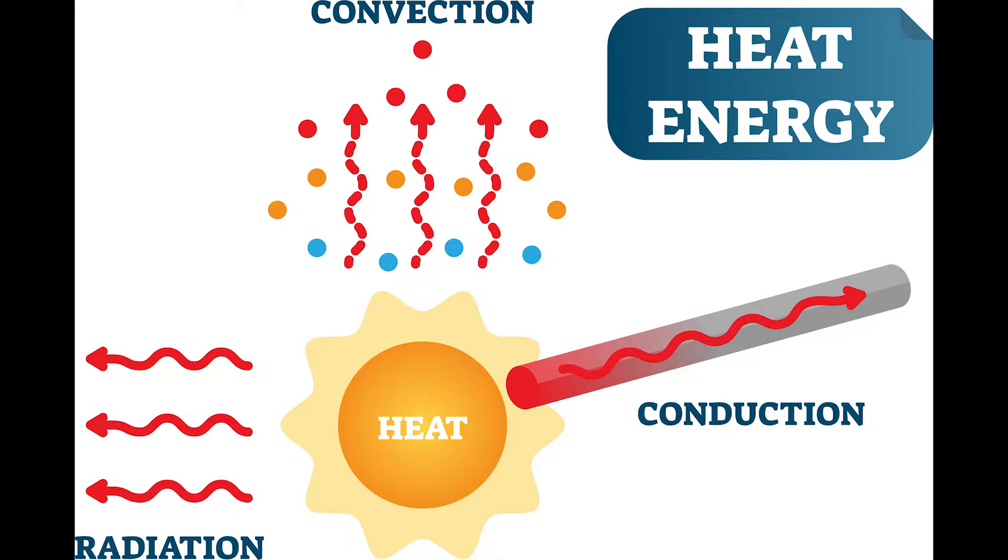The first is conduction, where individual metal molecules are passing heat energy to each other. The further along the rod stock, the less heat is being passed. If all of the heat were transferred by conduction, the blacksmith could not hold the end of the rod stock without it burning his gloves. So where does the rest of the heat go?